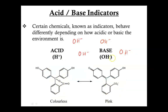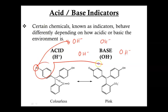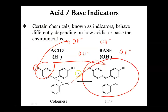Meanwhile, the opposite is true. If you're in a basic solution with lots of hydroxyl groups floating around, these hydroxyl groups will attract this hydrogen and rip it out. And again, that conformational change results in a different structure. And that is how our indicators tell us whether the solution is acidic or basic.